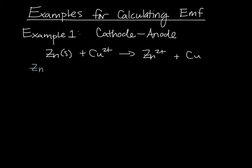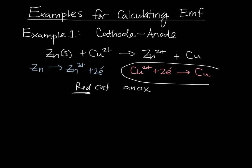the zinc oxidizes and changes into zinc two plus and the copper reduces. Now we just need to remember that phrase, red cat and ox, and then we can see that the reduction, the one gaining electrons, is going to be our cathode. And our other metal, the zinc, the one losing electrons, will be our anode.